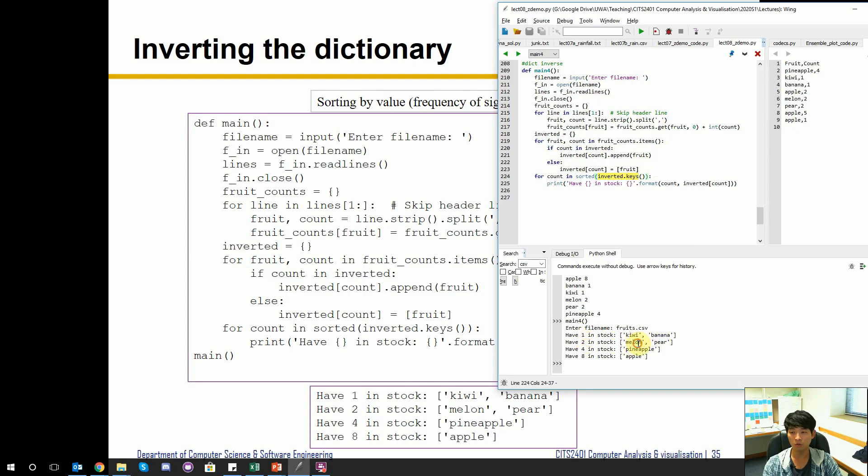Two stock of melon and pear, and so forth. So this way we can invert the dictionary as well. And as you can see, it doesn't take that many lines to actually convert from key values to value key pairs.